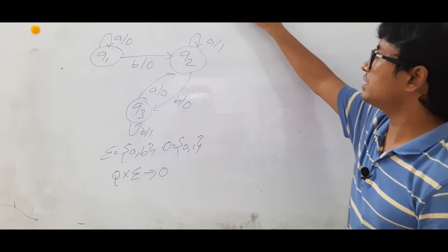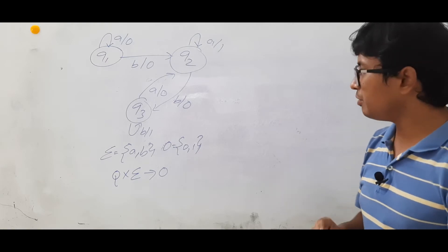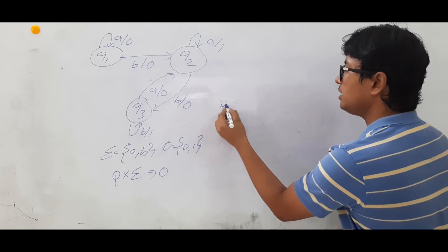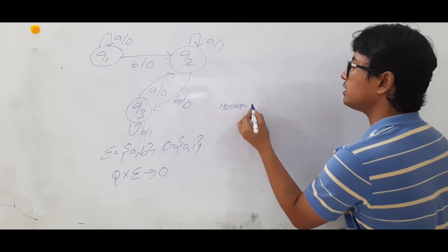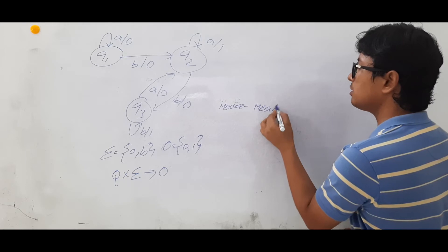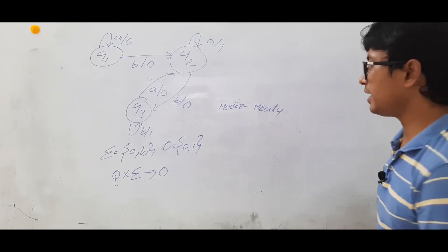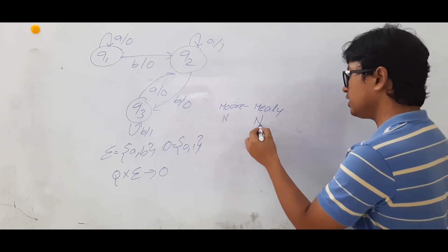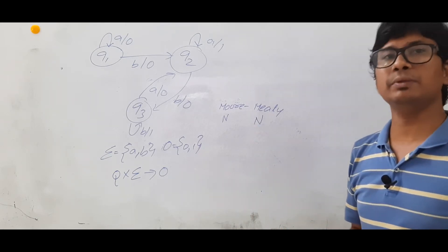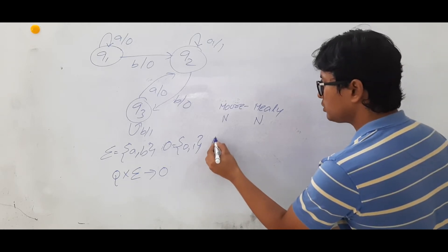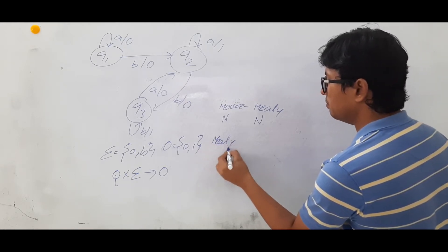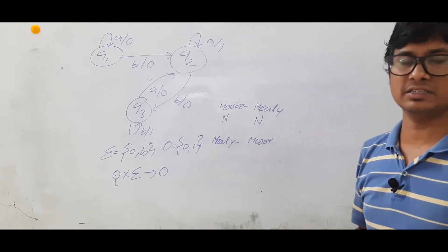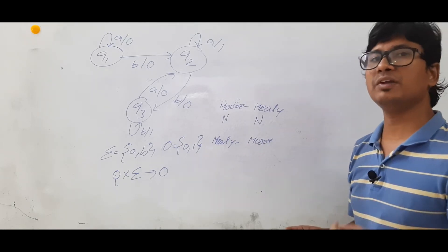Now we will discuss how to convert into a Moore machine. Before discussing this conversion I want to tell a few important points. In the earlier video we converted a Moore machine to an equivalent Mealy machine. If it is having n number of states, the equivalent Mealy machine is also having the same number of states. But when it comes to the conversion of a Mealy machine to a Moore machine, the number of states will increase.